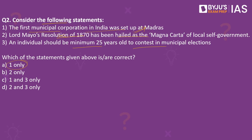Lord Mayo's resolution is on financial decentralization and it visualized the development of local self-government institutions. The third statement is also wrong: the minimum age to contest in municipal elections is 21 years, not 25 years. Since the second and third statements are wrong and the first statement is right, the answer is one only.